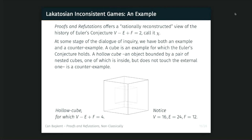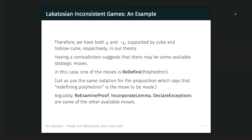A quick example. At the beginning of the book we have the hollow cube example. If we call the Eulerian conjecture chi, we see that we have two objects: the cube and the hollow cube. For the cube, the conjecture holds, so we have chi. However, for the hollow cube it doesn't hold, because V minus E plus F equals 4. So we have the negation of the conjecture. In the same system, we have chi and not-chi. But that's okay — all revision theories have something to say about this. From a logician's perspective, I can say that not everything follows from this contradiction.